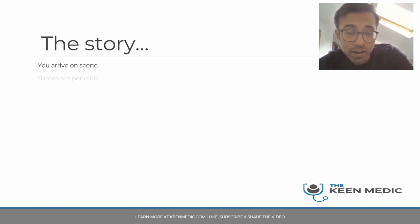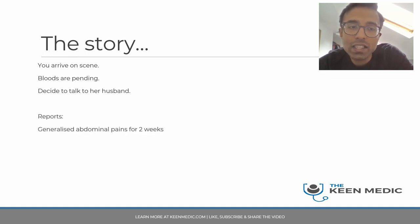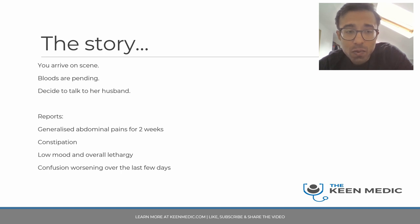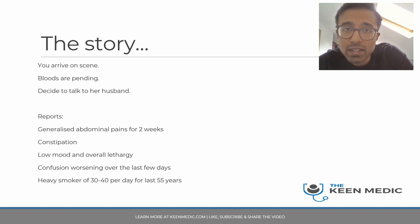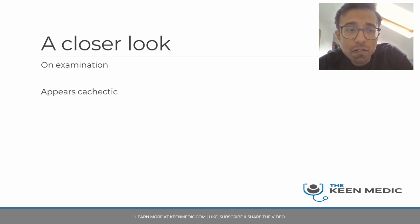On arrival, blood tests are pending. You speak to her husband, who reports she has had generalised abdominal pains for the past two weeks with constipation, low mood, and overall lethargy. Her confusion has been worsening over the last few days. She is a heavy smoker — approximately 30 to 40 cigarettes per day for the last 50 to 55 years. She is known to have diabetes on insulin.